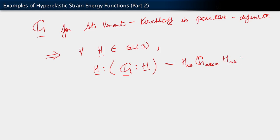This quantity is greater than or equal to 0. It is equal to 0 if and only if H itself is equal to 0. This is what we mean by positive definiteness.